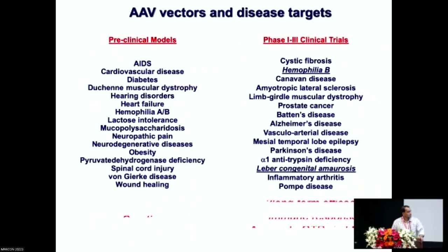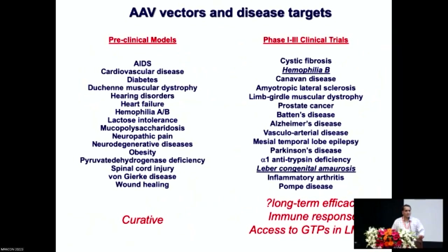The learning from this exercise is that while in most models gene therapy is typically curative, when it comes to humans there are certain drawbacks. These relate to the long-term efficacy of gene therapy once you administer it, the immune response directed against these viruses when administered in huge doses, and — at least in our setting — access to these gene therapy products, which is a major issue.